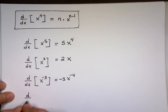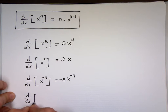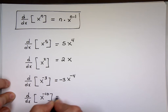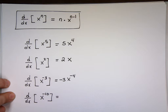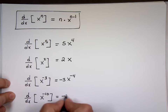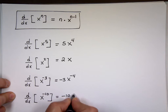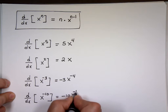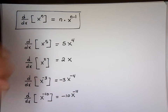The derivative of x to the negative 10: negative 10x to the negative 11. Good.